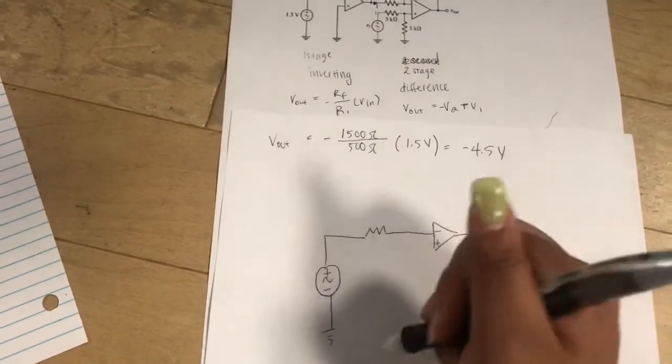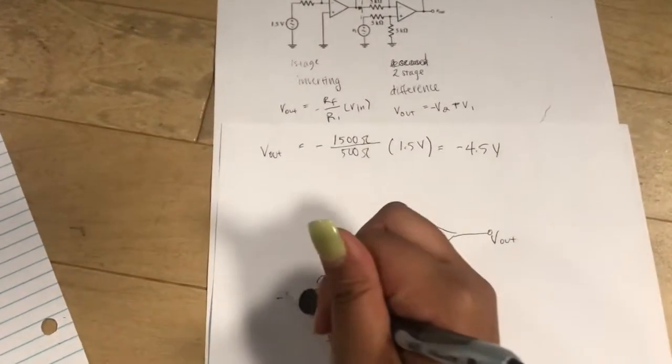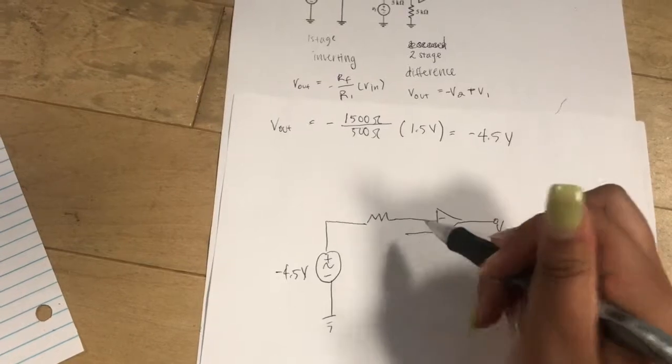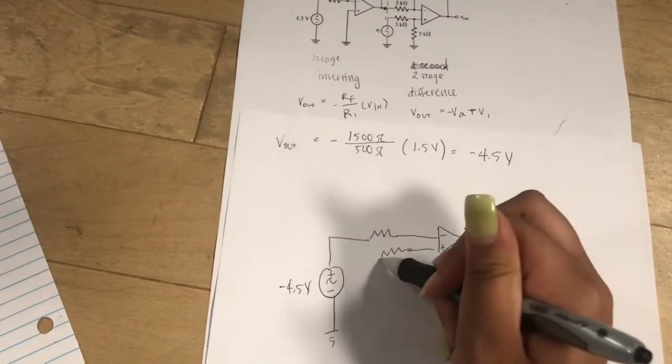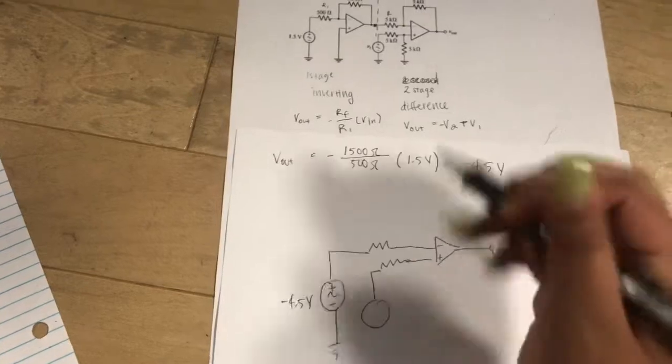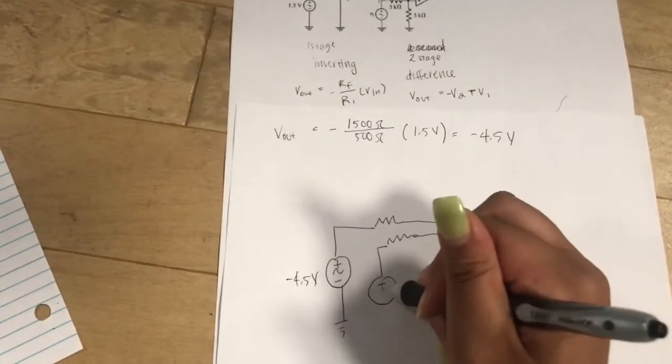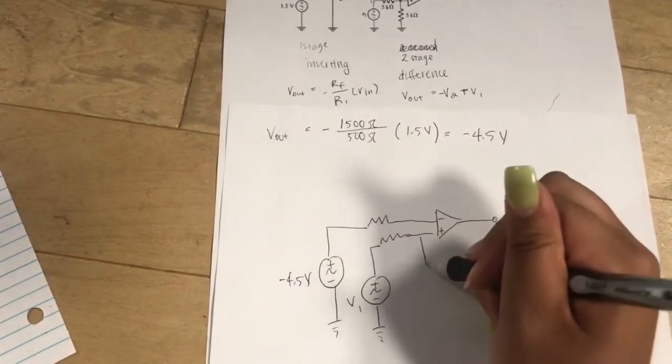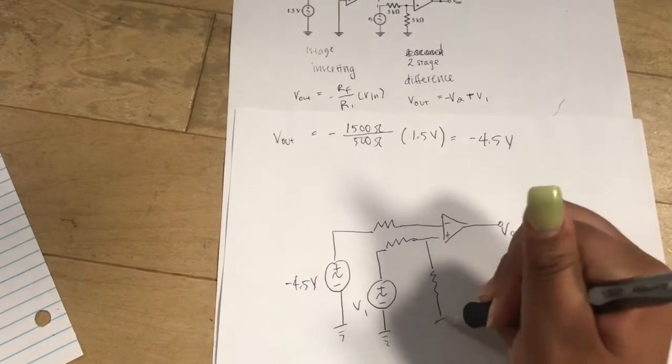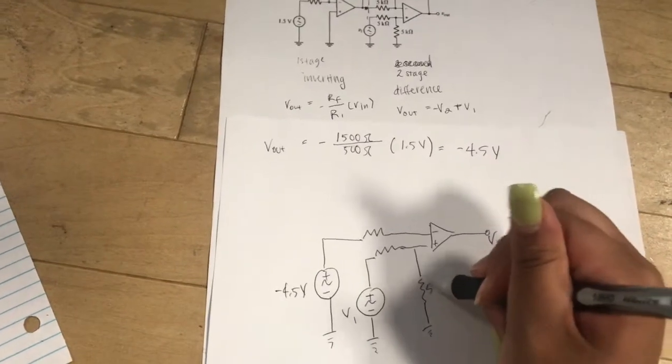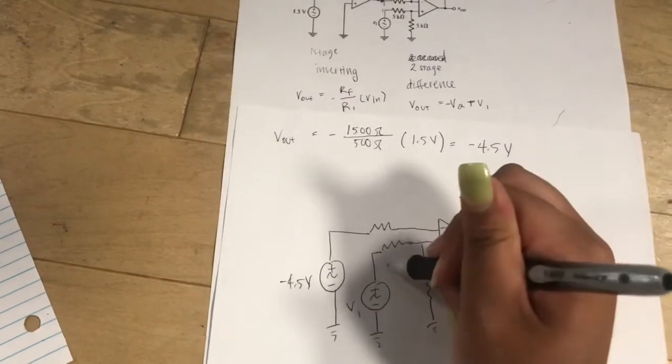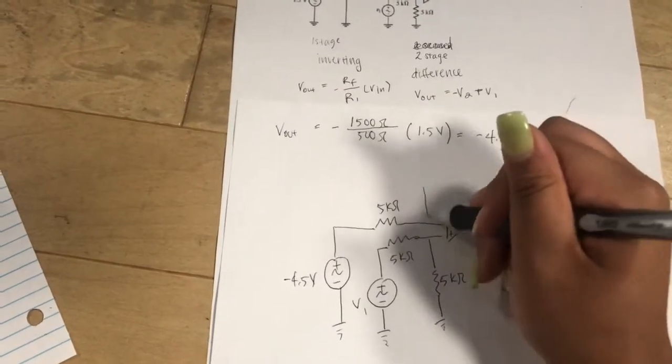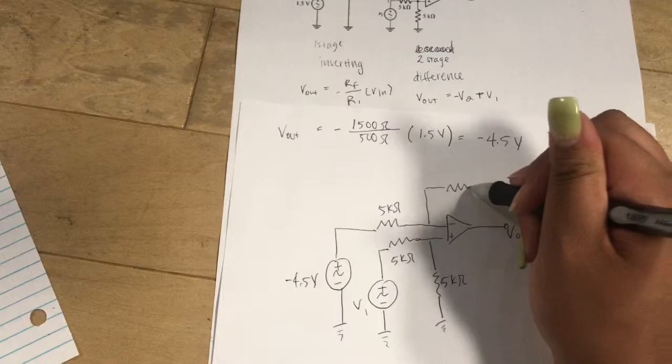And then this now, Vn, is negative 4.5 volts. And then there is V1. And then all the other components that were in the second stage, which all happened to be 5 kiloohms.